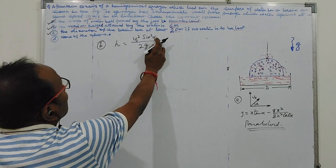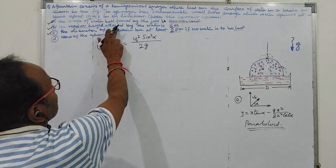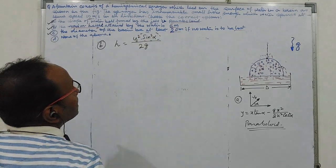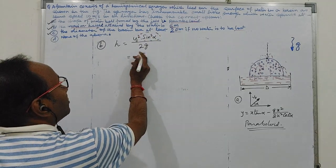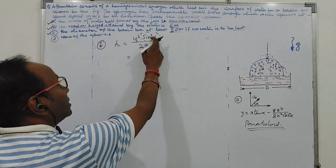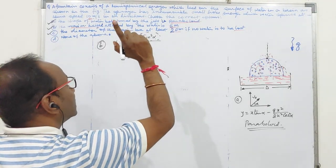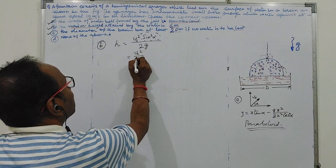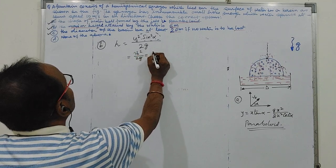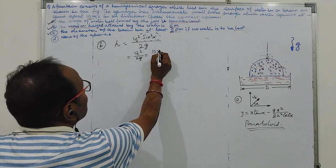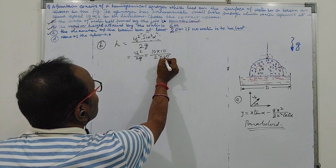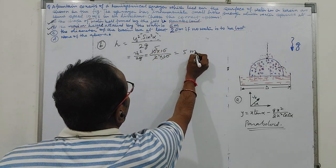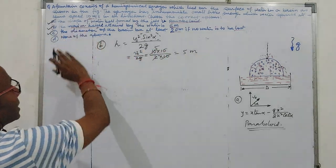Question is asking maximum height. So sine square alpha should be maximum. For that to happen, alpha should be 90 degree and the value will be 1. sine square alpha maximum will be 1. So this is v naught square by 2g. So v naught square you can write 10 into 10 divided by 2 into 10. 5 meters, so B also is correct.